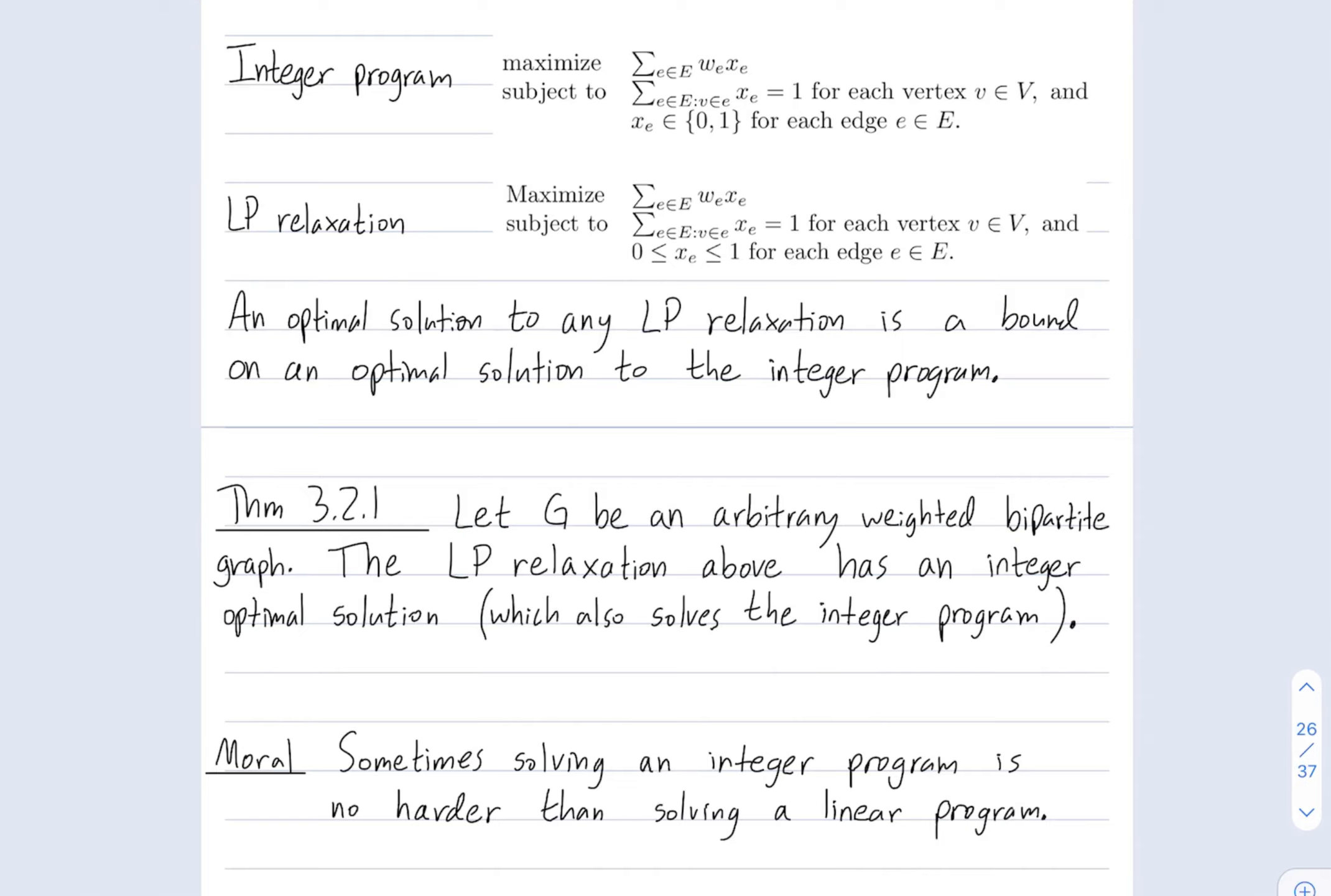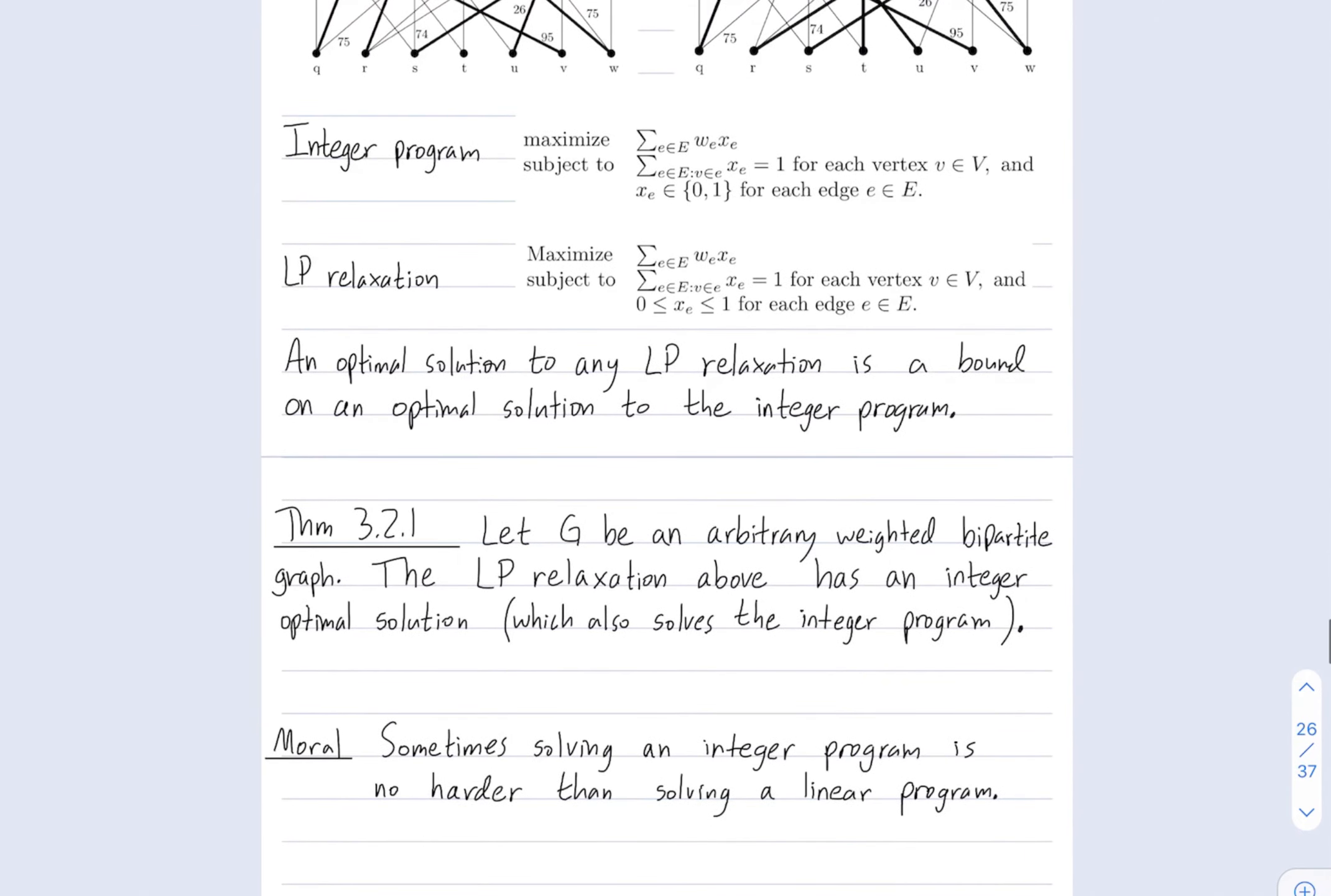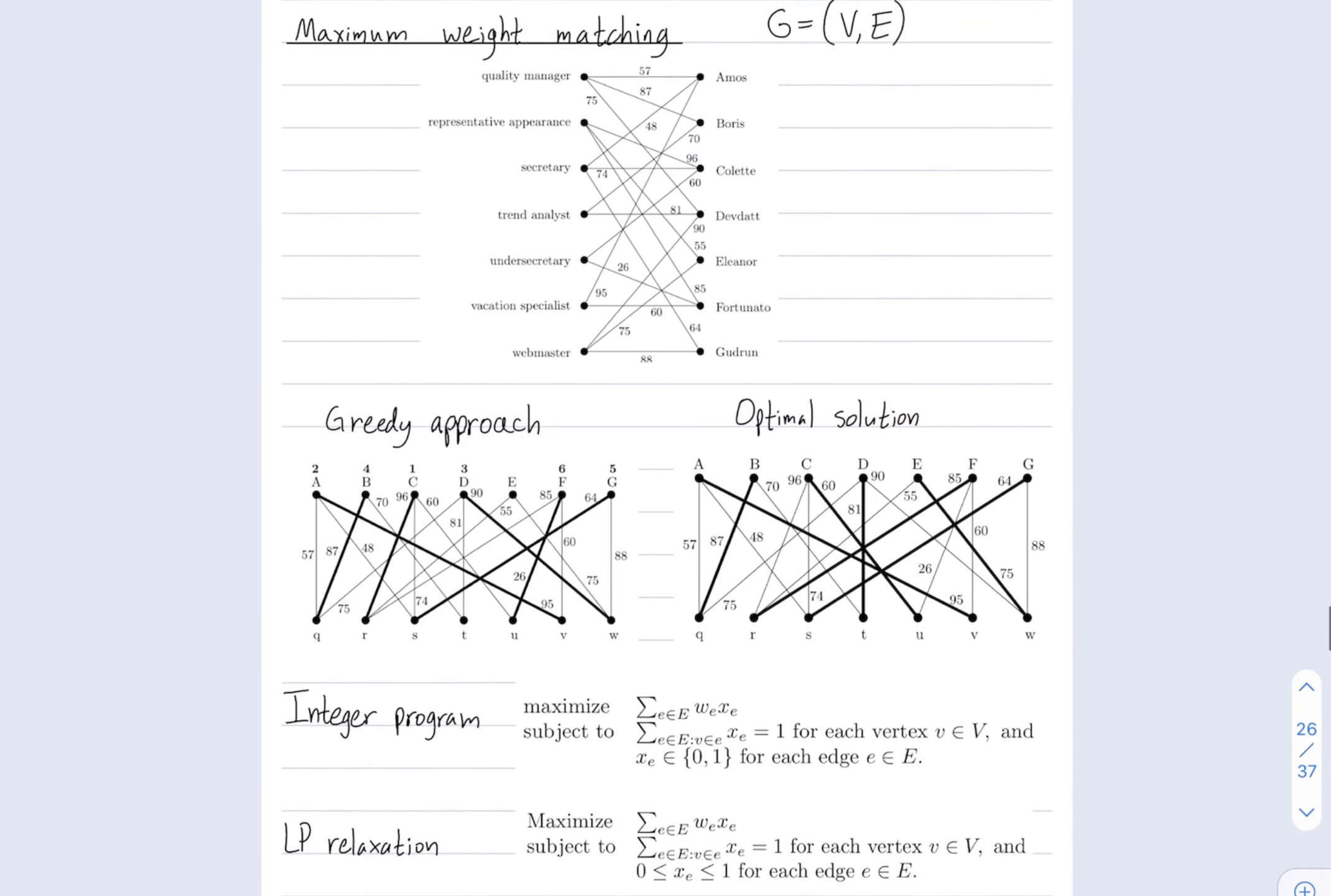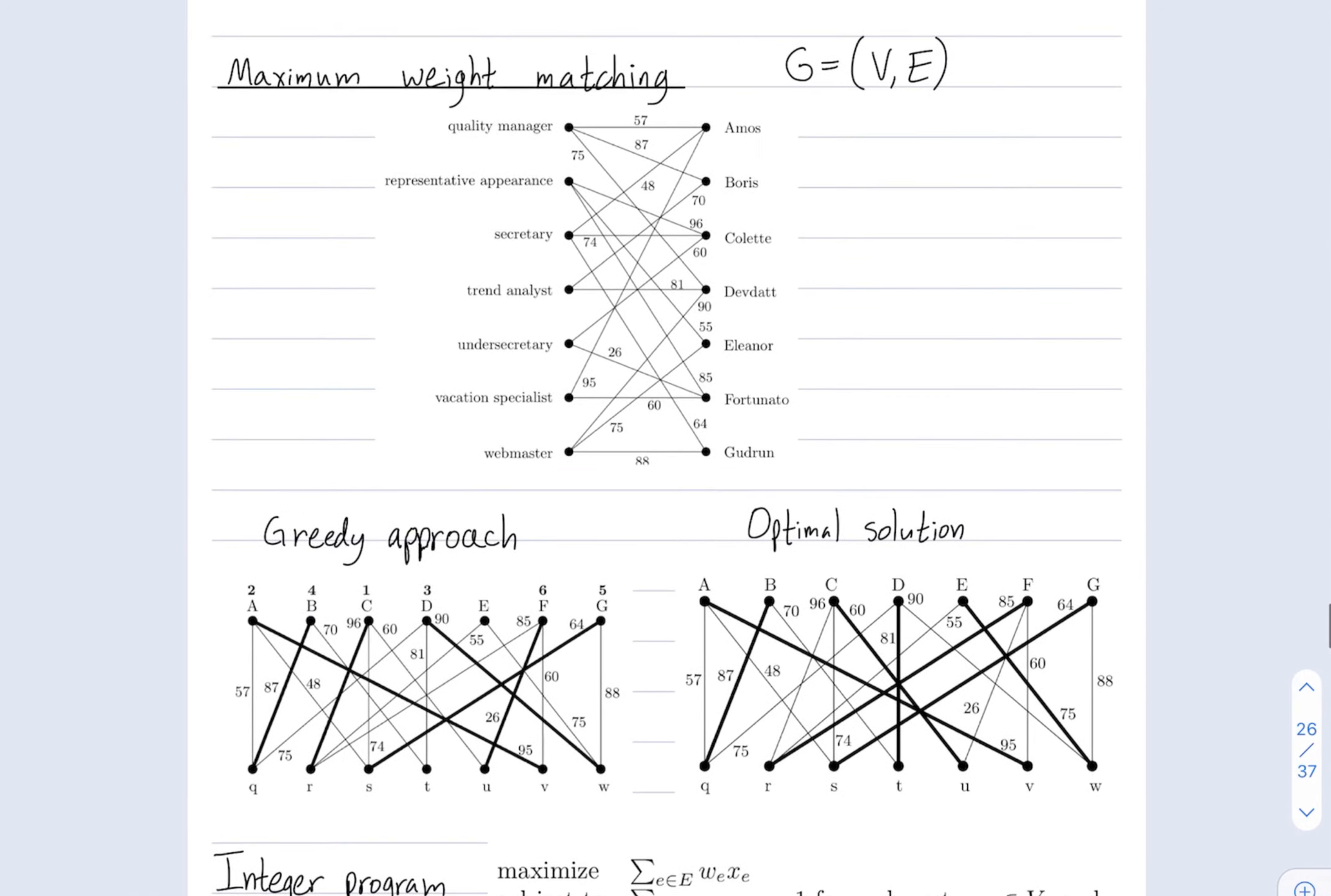So, the moral here is that sometimes solving an integer program is no harder than solving a linear program. This is a case of that matching. In matching, you just solve the LP relaxation, and you end up accidentally solving the integer linear programming problem. In general, however, that's not the case. Sometimes, your LP relaxation does not also solve your integer program. All right. Thanks so much, and I hope you enjoyed this brief introduction to maximum weight matching problems. Thanks. Bye.